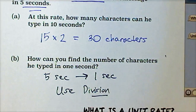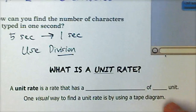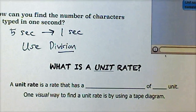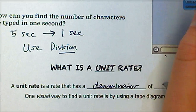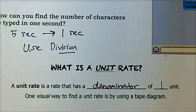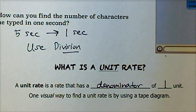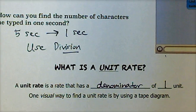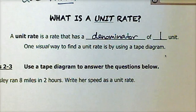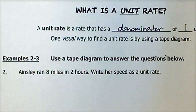A unit rate is a rate that has a denominator of one unit. Going back to the example of miles per hour — if you're measuring the amount of miles you travel in one hour, that would be a unit rate. As long as the second unit has a quantity of one, that's what's called a unit rate. In the next couple of examples we're going to use a visual diagram known as a tape diagram to find unit rates.